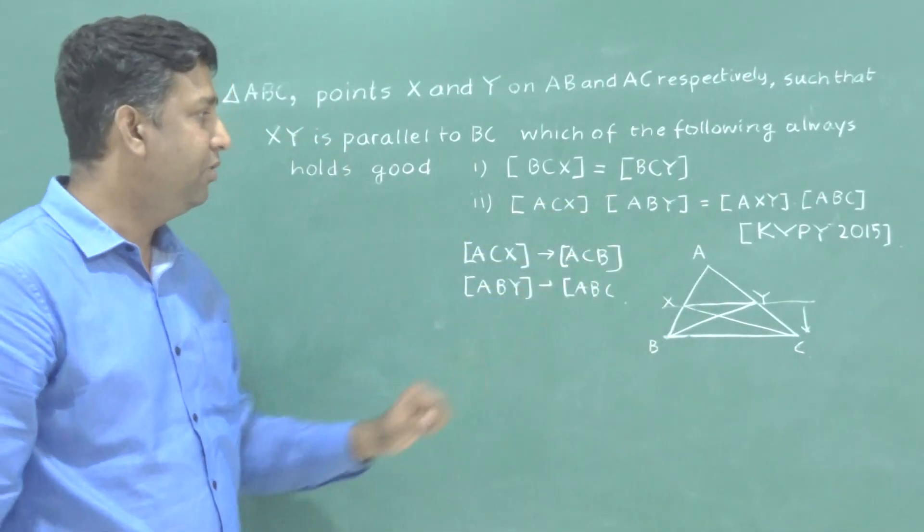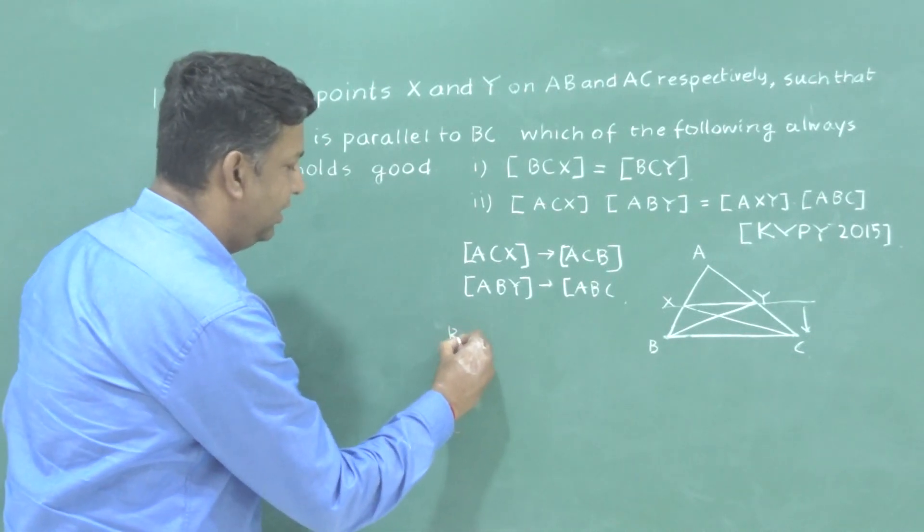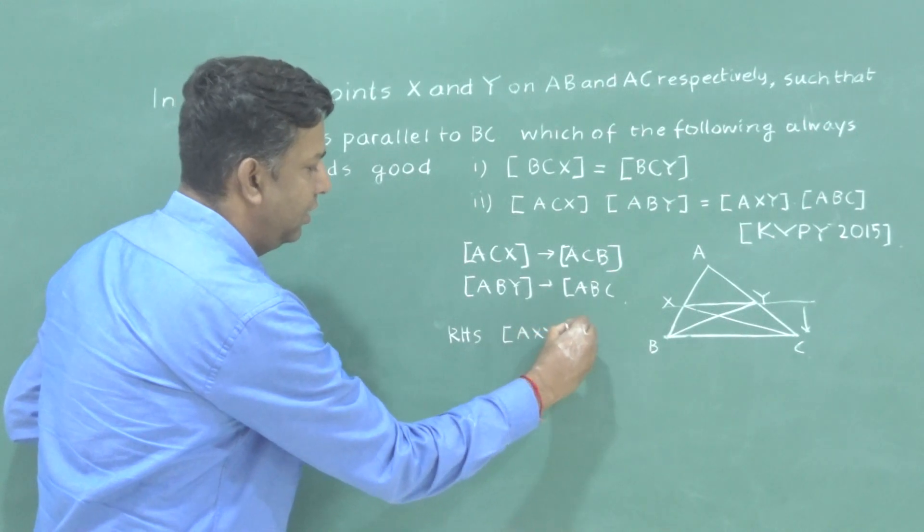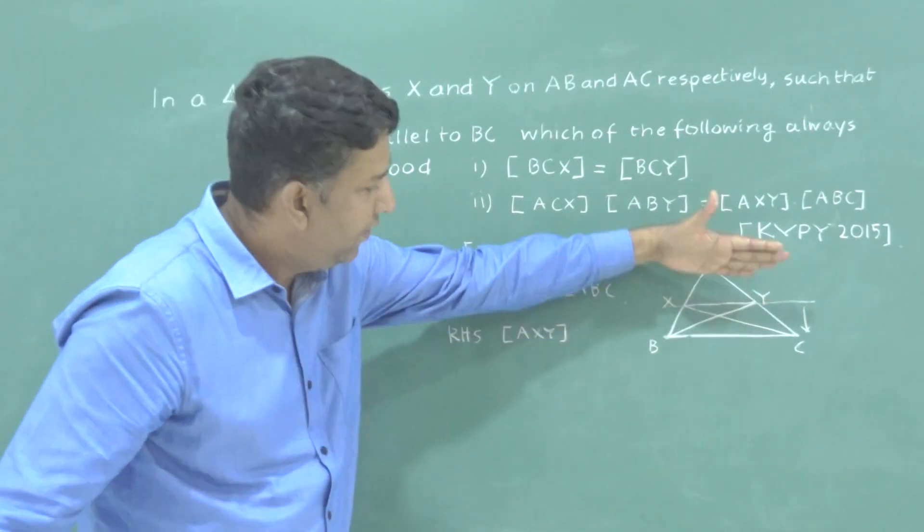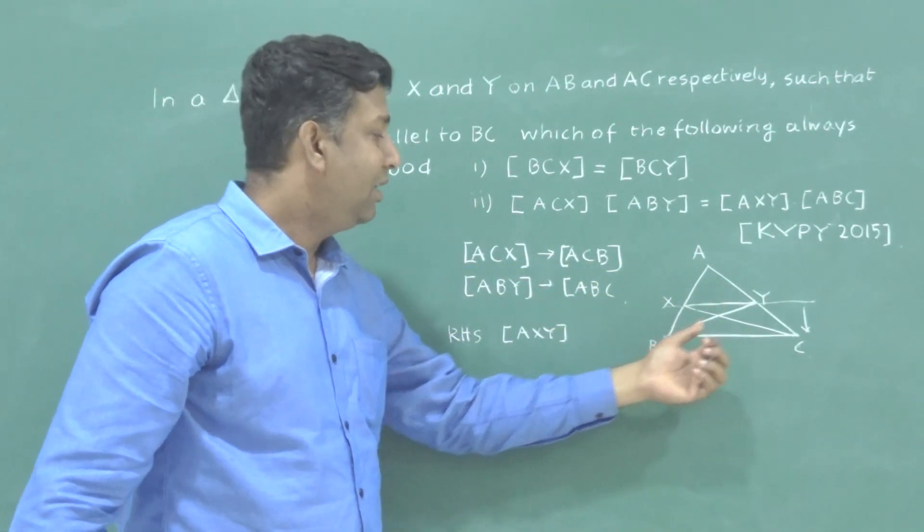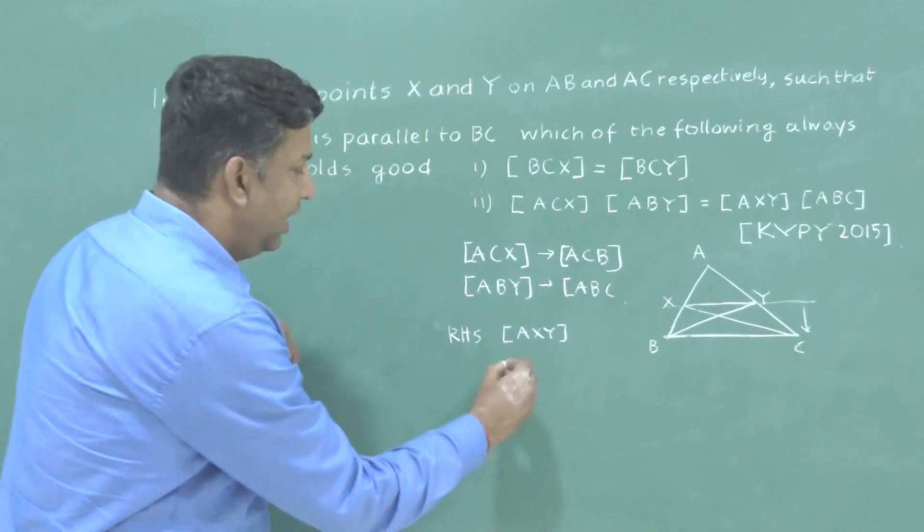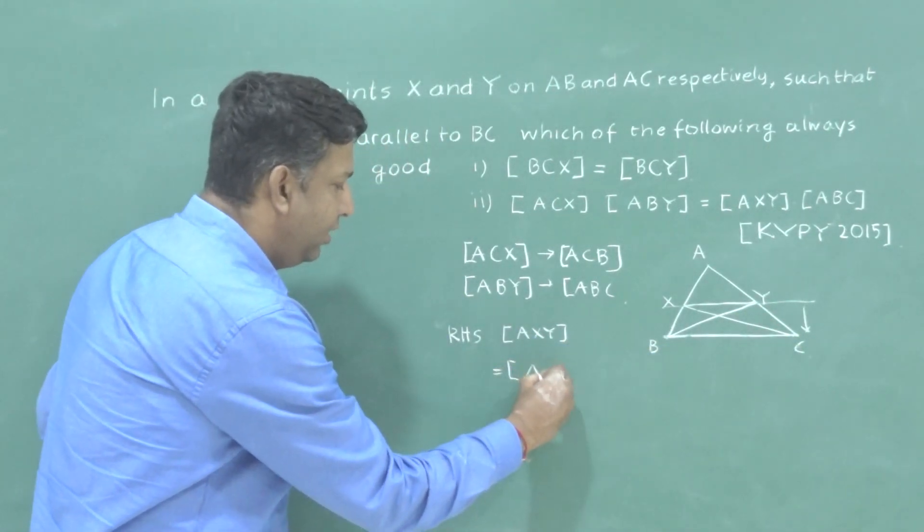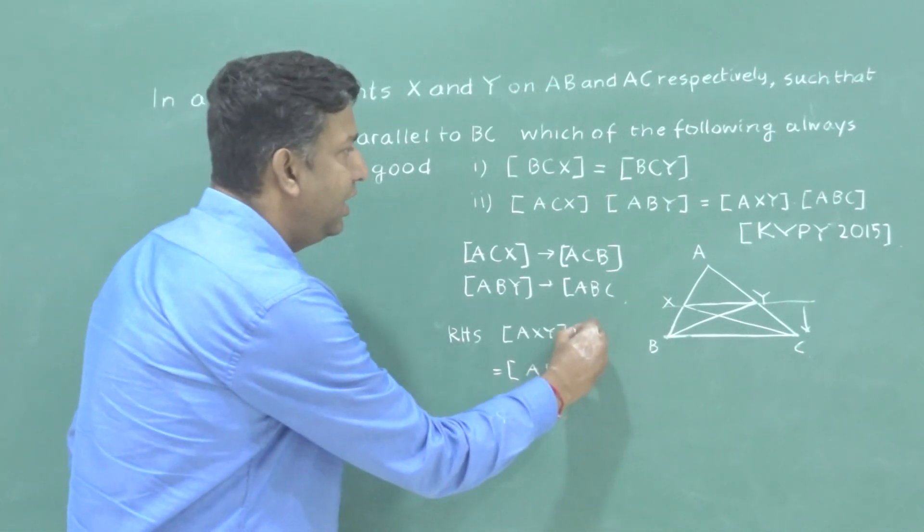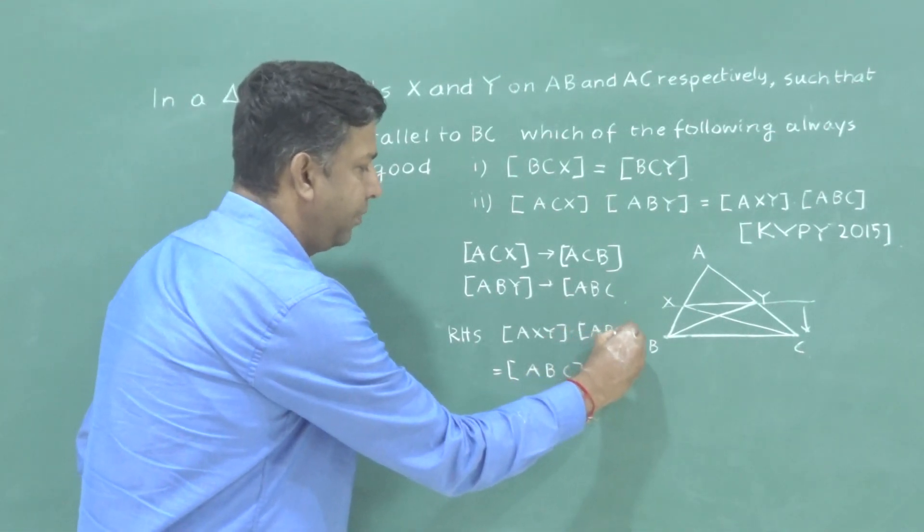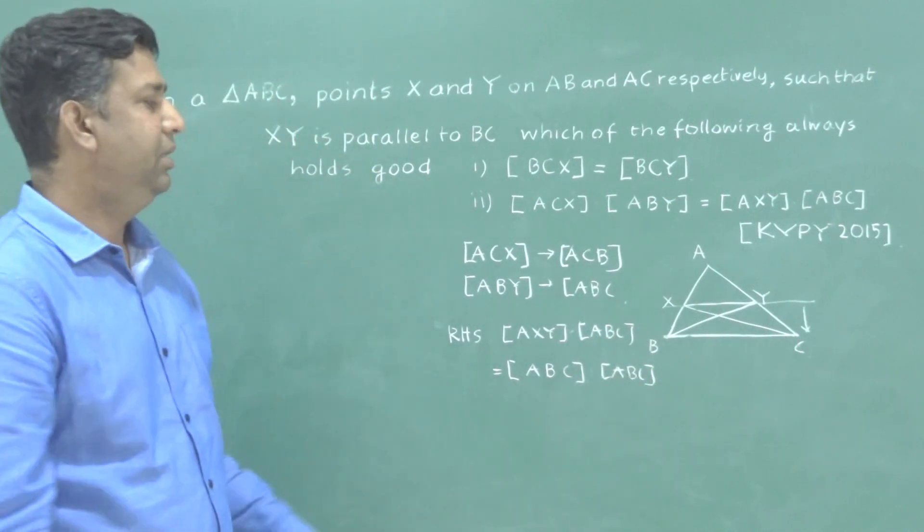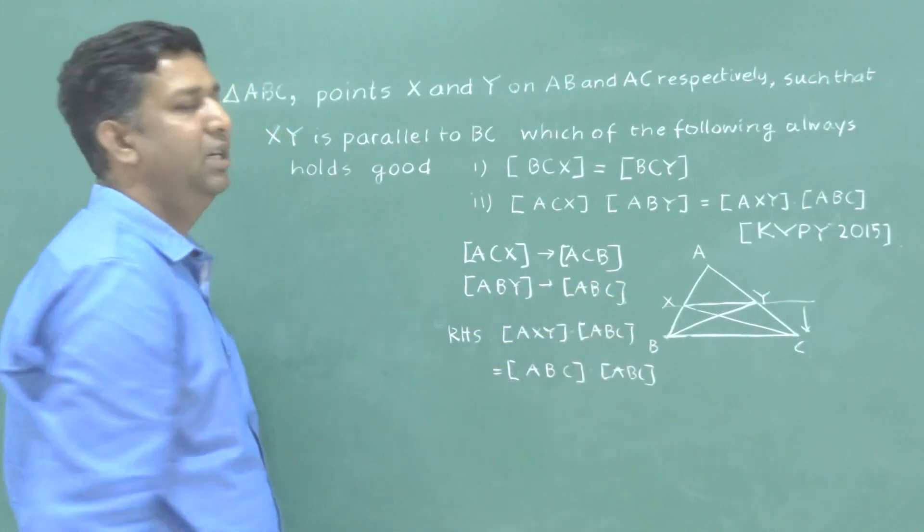So this is all about the left hand side and I am going to do the right hand side. It's given AXY. So can I write, when XY moves towards BC and it will coincide with BC, in that case, it will become B and this will become C. So it will become ABC and it's already given ABC. So it will become ABC into ABC, so left hand side is equal to right hand side, that's it.